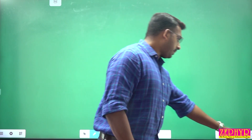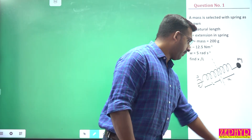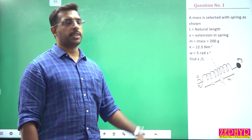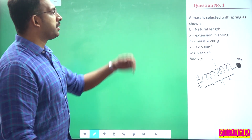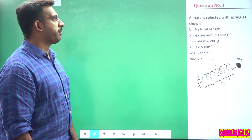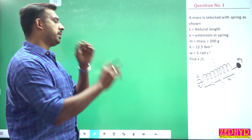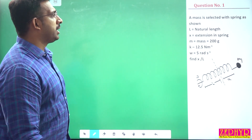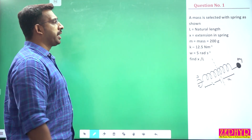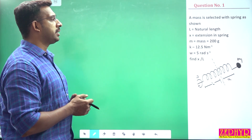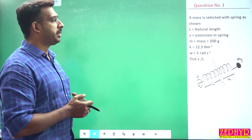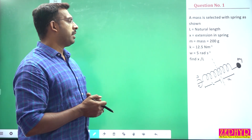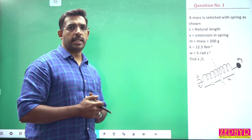First question. A mass is connected with a spring as shown. L is the natural length, X is the extension in the spring. M is the mass, 200 grams. K is the spring constant, 12.5 N per meter. Omega is 5 radian per second. Find the ratio of extension to the original length.